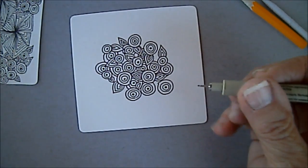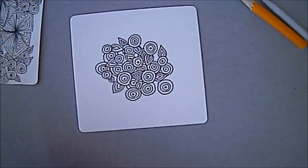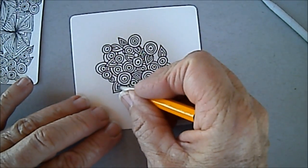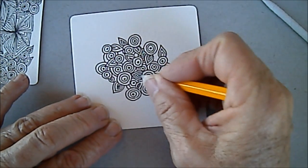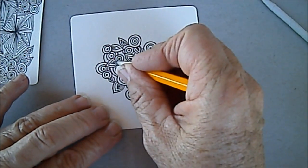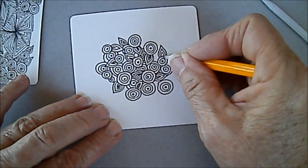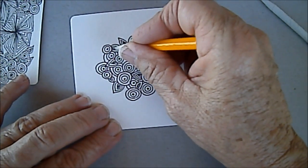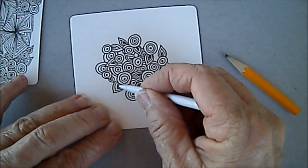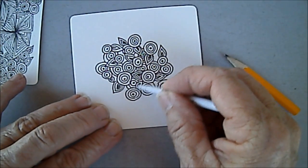And to shade this one, this is kind of a fun one to shade because you can just pick some ways. But I'm just going to shade like the center of that little leaf. And then use my blending stem and blend it out.